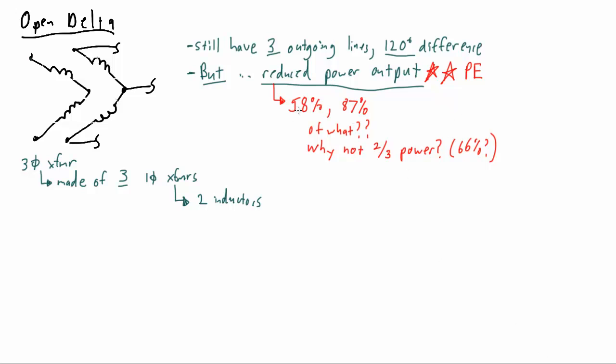So what do these two percentages really represent? Let's talk about the 58% first. It is 58% of what? Well it's 58% of the power output of the rated values of a complete closed delta properly functioning.